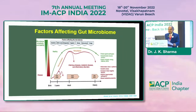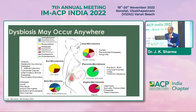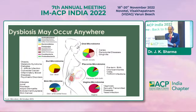Dysbiosis may occur anywhere in the body — oral microbiome, gut, placenta, skin, and vagina — and can lead to multiple diseases. From the gut: obesity, metabolic syndrome, diabetes, C. difficile infection, colorectal cancer, inflammatory bowel disease, and psychiatric disorders. From the skin: allergies, acne, psoriasis, atopic dermatitis, and skin cancers. Oral microbiomes can lead to caries, periodontal disease, and gingivitis.